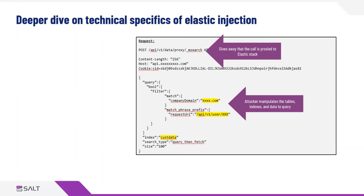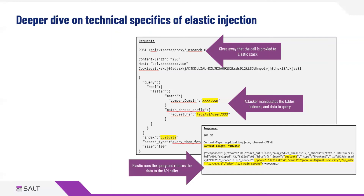Really all the attacker needs to do is manipulate this POST payload message body — you'll see the highlighted bits that are most relevant for the attack. In this case, that Elastic instance was storing multiple tables and data sets for all different companies, and that was controllable by the API caller. As an attacker, I want to manipulate those things — what is the company domain, are there other companies for which this organization is storing data? I can manipulate the user requests, as you can see in the second highlighted bit. Then I want to search for customer data, because the index is also controllable. The Elastic Stack instance returns the data set for that query because it's doing what it was designed to do — completing the multi-search request and returning the data.